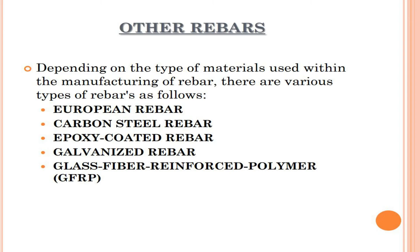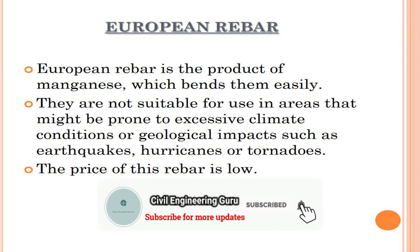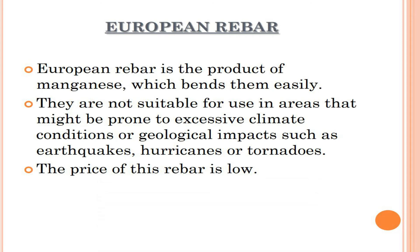Other rebars: depending on the type of materials used within the manufacturing of rebar, there are various types as follows. European rebar is the product of manganese, which makes it bend easily. It is not suitable for use in areas that might be prone to excessive climate conditions or geological impacts such as earthquakes, hurricanes, or tornadoes. The price of this rebar is low.